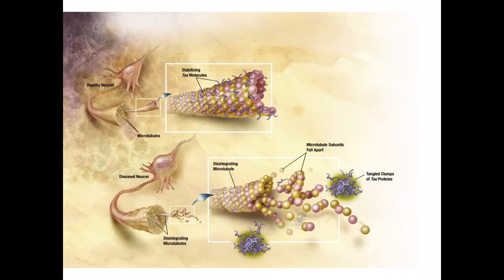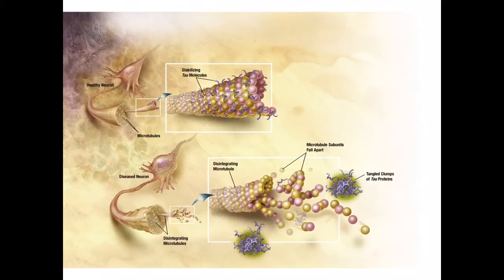The second problem that arises in individuals with Alzheimer's is called neurofibrillary tangles. These tangles are caused by abnormal clumps of a protein called tau. Tau binds to and stabilizes microtubules, which guide nutrients and molecules from cell bodies to axons and dendrites. As seen in this figure, these small blue strands are stabilizing tau molecules, and this larger figure is a microtubule on the neuron.